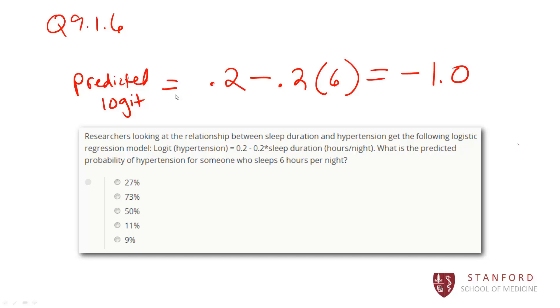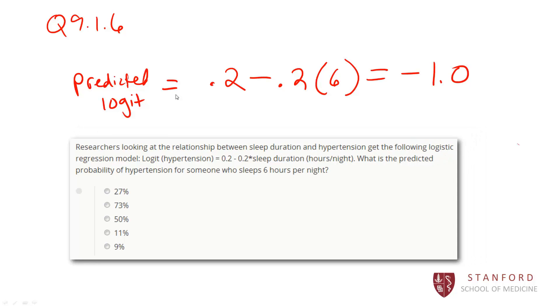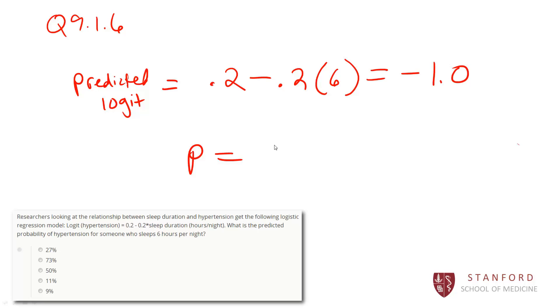We have to then convert that logit back to a probability. We can convert to a probability by remembering that e raised to the logit, divided by 1 plus e raised to the logit, is equal to the probability. So we would just plug in here the predicted logit of negative 1.0. And that gives us a predicted probability of 27%. So somebody who sleeps 6 hours per night is predicted to have a 27% chance of hypertension. The correct answer is A.